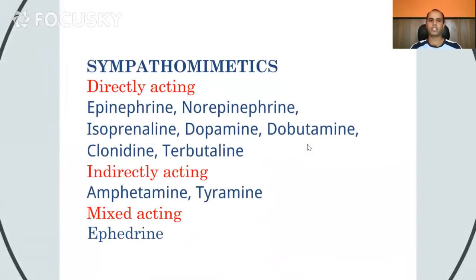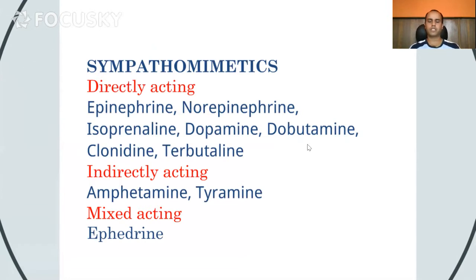Let us look at the examples. The directly acting drugs are epinephrine, norepinephrine, isoprenaline, dopamine, dobutamine, clonidine, and clonitaline. For indirectly acting drugs, amphetamine and tyramine are typical examples. And mixed acting drugs include ephedrine.